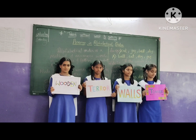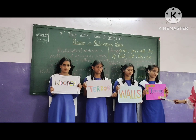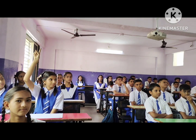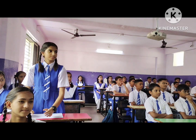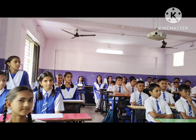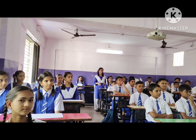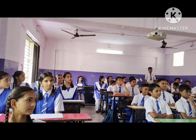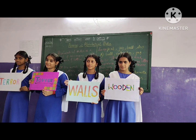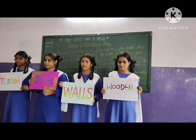Fourth example. The words are: Wooden, Terror, Wall, and Tower. Terror comes first — T, E. Then Tower — T, O. Then Wall — W, A. Then Wooden — W, O. So the order is: Terror, Tower, Wall, Wooden. Have you understood how to arrange in alphabetical order? Yes.